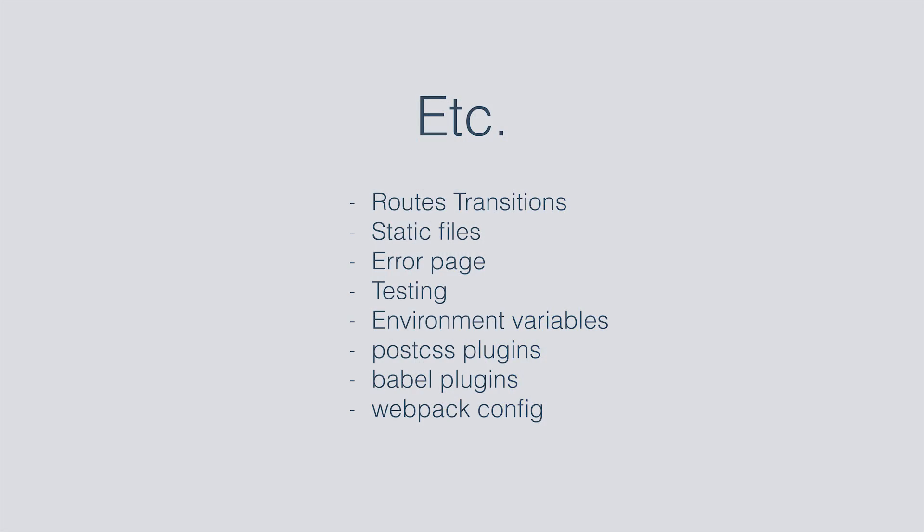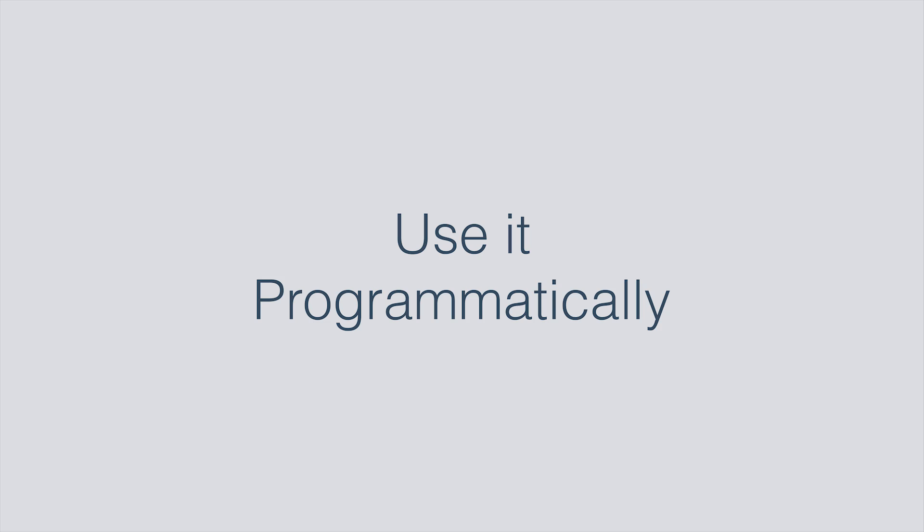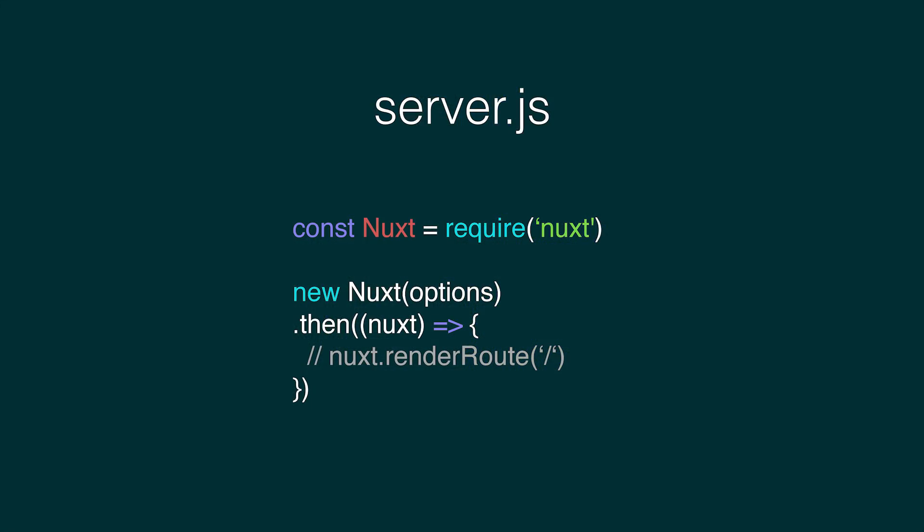There are more functionalities — quickly: route transitions. Nuxt already uses the transition component, so you can just specify your transition key in your page and it will use that transition. There's also a static folder where you can put all your static files, a customizable error page, testing with jsdom and AVA, environment variables, and more configuration. When using a project, I don't really like using just the binary — I'd like to configure more. That's why with Nuxt you can use it programmatically: you can require it and call new Nuxt, where the options are all the same options from nuxt.config.js.